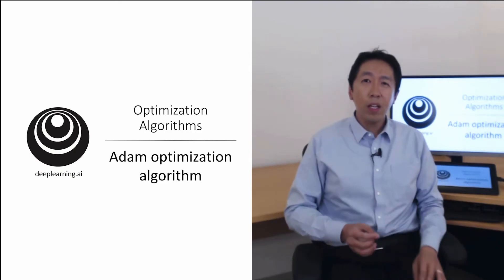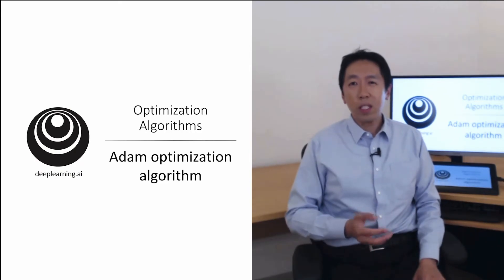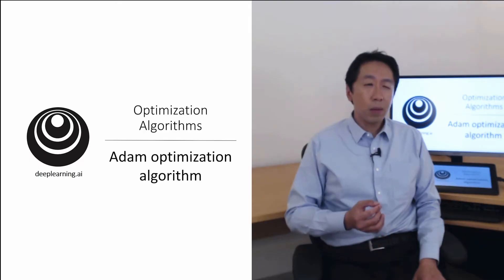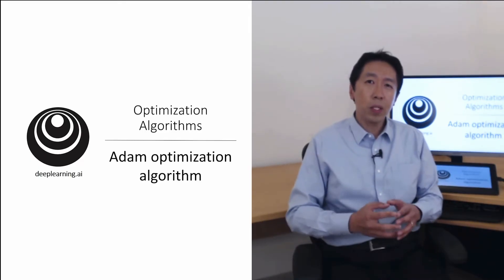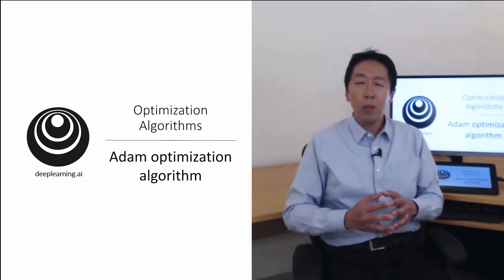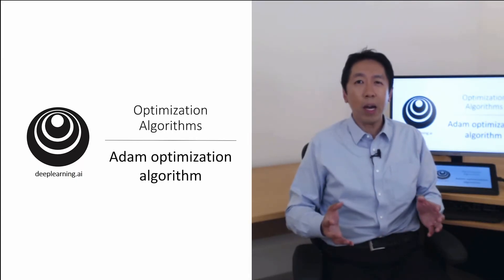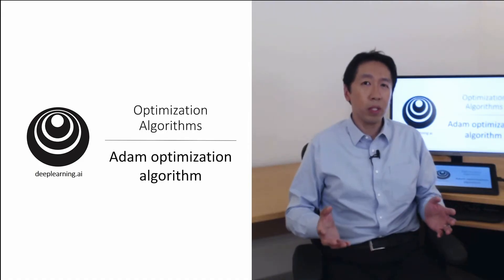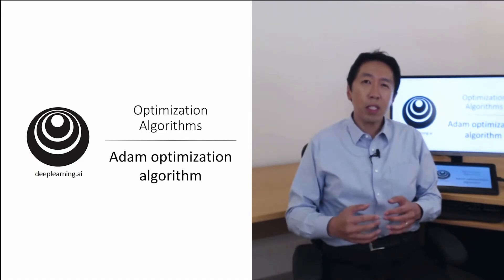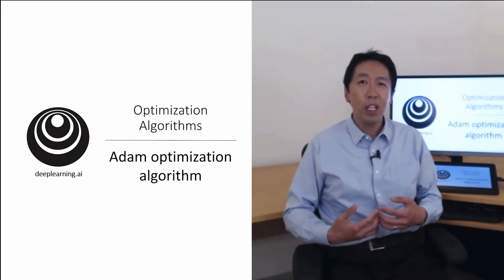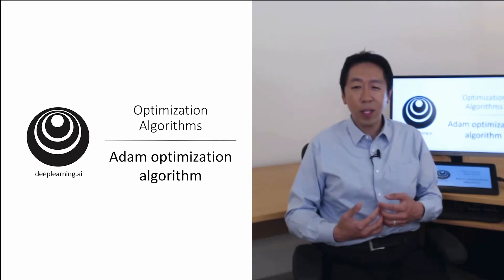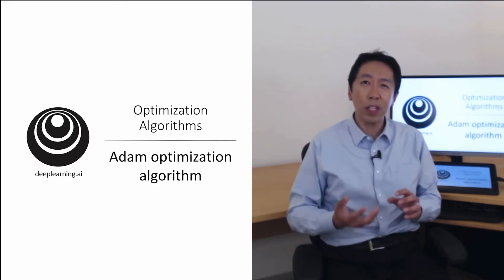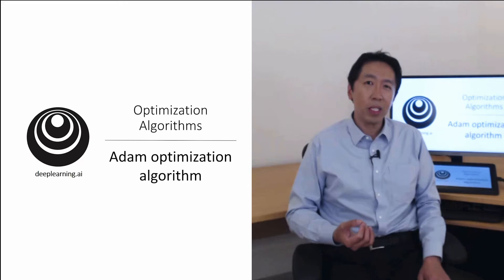During the history of deep learning, many researchers, including some very well-known researchers, sometimes proposed optimization algorithms and showed that they work well in a few problems. But those optimization algorithms subsequently were shown not to really generalize that well to the wide range of neural networks you might want to train. So over time, the deep learning community actually developed some amount of skepticism about new optimization algorithms. And a lot of people felt that gradient descent with momentum really works well, and it was difficult to propose things that work much better.